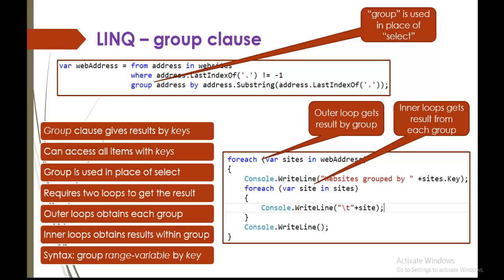The syntax is something like this: group, then the range variable, by the key. Here you can observe in the example — group, the range variable is address, and this is the key. The key is address.Substring(address.LastIndexOf('.')). Before jumping into Visual Studio, let us give a glance at the important points of the group clause: it gives results by keys and requires two loops. Outer loop obtains each group; inner loop obtains results within that group.